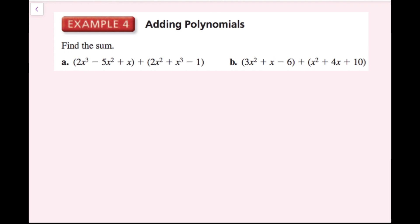In this example, we find the sum of two polynomials by combining like terms. Like terms have identical variable parts — same variable taken to the same exponent. Adding 2x cubed minus 5x squared plus x to x cubed plus 2x squared minus 1: for x cubed terms, 2x cubed plus x cubed equals 3x cubed. For x squared terms, negative 5x squared plus 2x squared equals negative 3x squared. The remaining terms, plus x and minus 1, are brought down.